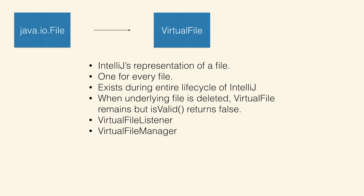Virtual files are IntelliJ's representation of a file — there's one for every file. The reason they exist is to give you more contextual information about a file that you wouldn't usually get from the IO file. For instance, a file that's deleted is no longer on the system, but a virtual file will persist after it's been deleted because you might have references to it in your code. So typically before you start acting on a virtual file, you call is valid to see if you can actually do things with it. There are also two auxiliary classes — virtual file listener and virtual file manager — which give you lifecycle callbacks for a virtual file, so you can tell when a file has been renamed or moved.